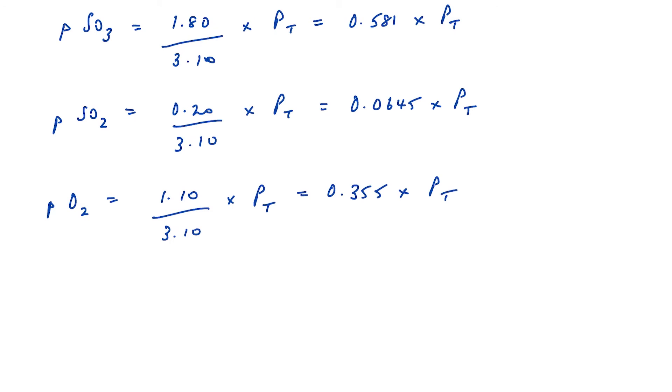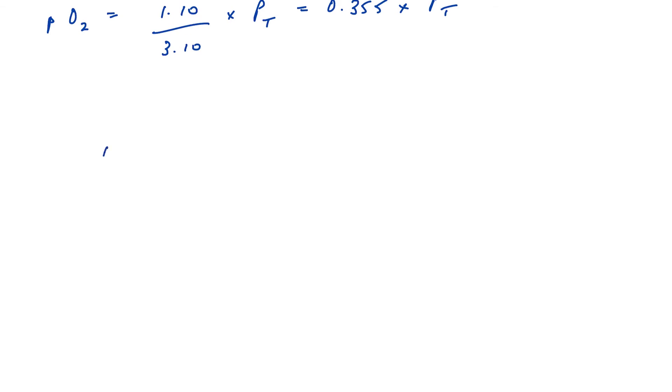So let's put all of that into our expression for Kp. Kp was 0.13 atmospheres is equal to 0.581 raised to the power of 2 times Pt raised to the power of 2 over 0.0645 to the power of 2 times Pt to the power of 2, so I'm going to put that in brackets, multiplied by 0.355 times Pt. So these are the expressions for each of the partial pressures of our gases.